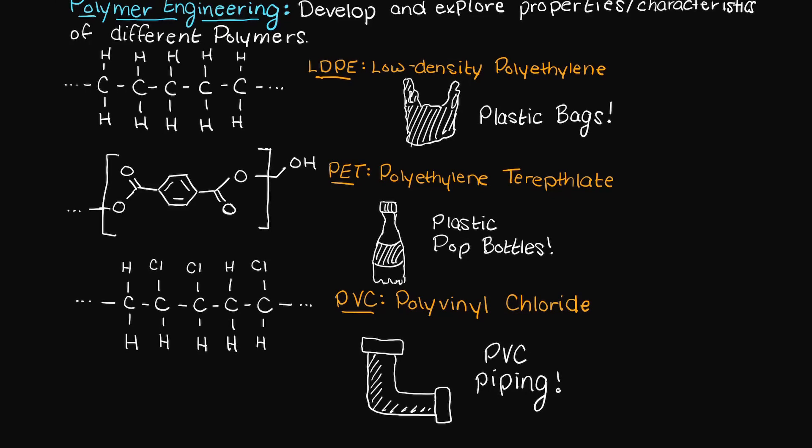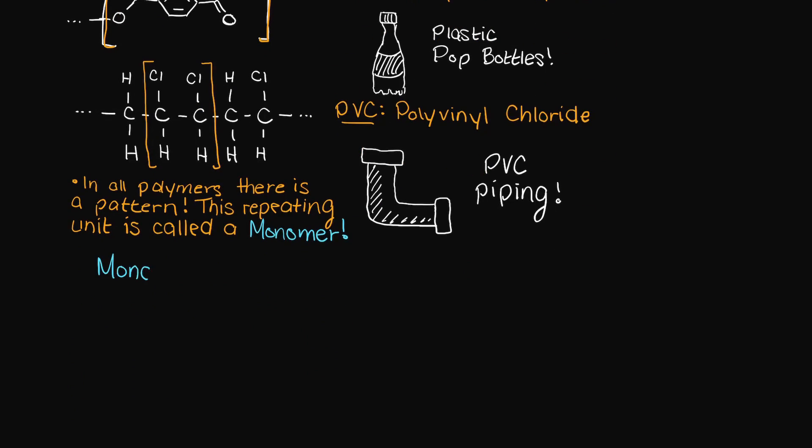Do you notice any similarities between these three polymers? You may notice that in each polymer there is a pattern. There is one piece in each of these polymers that is continually repeated and chained together to grow extremely large. These one unit building blocks, the portion of the polymer that is repeated, is called a monomer.